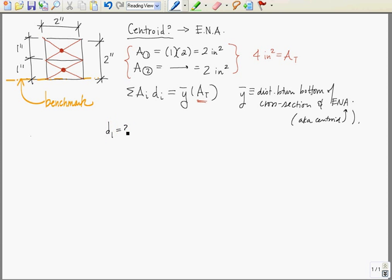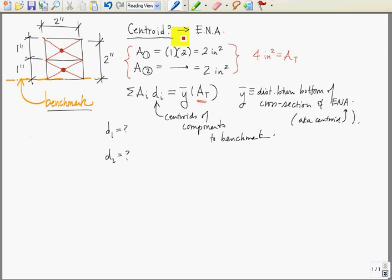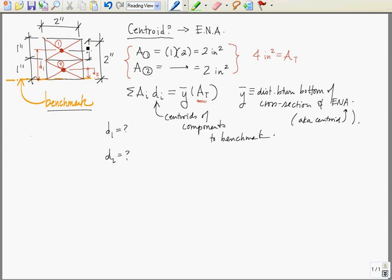So let's find out what our distances are. These distances are between the centroid of each component to our benchmark. So in other words, area 1, area 2, the distance between the centroid of area 1 and the benchmark is this distance, d sub 1, and d sub 2 is this distance. And of course, the centroid's halfway through, so this is 1 half, and this is also 1 half.